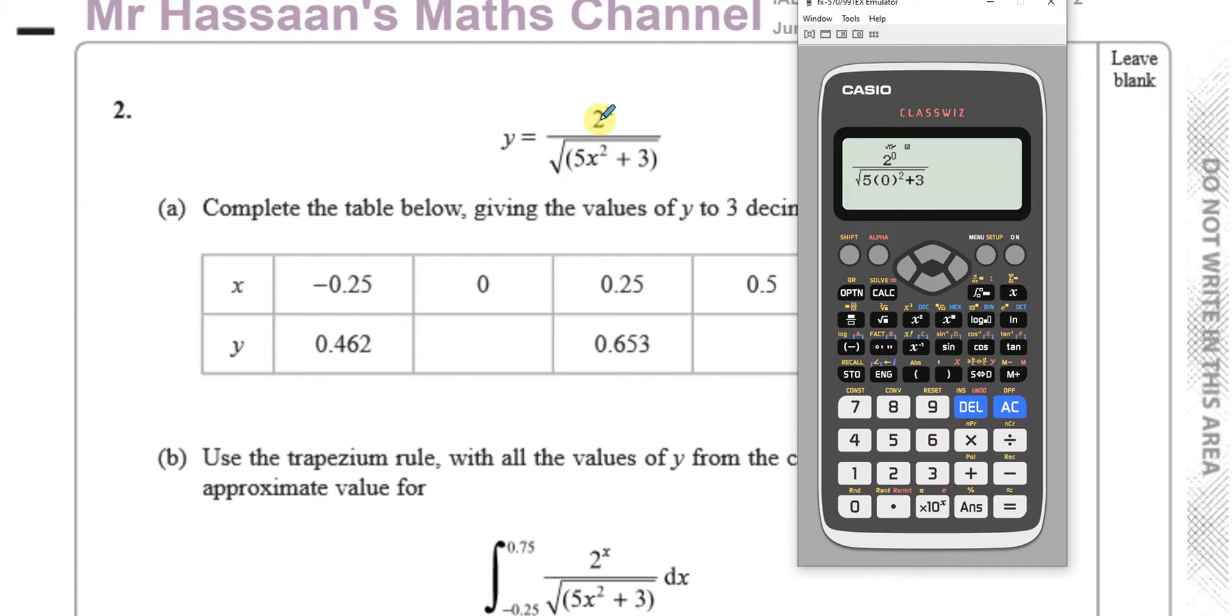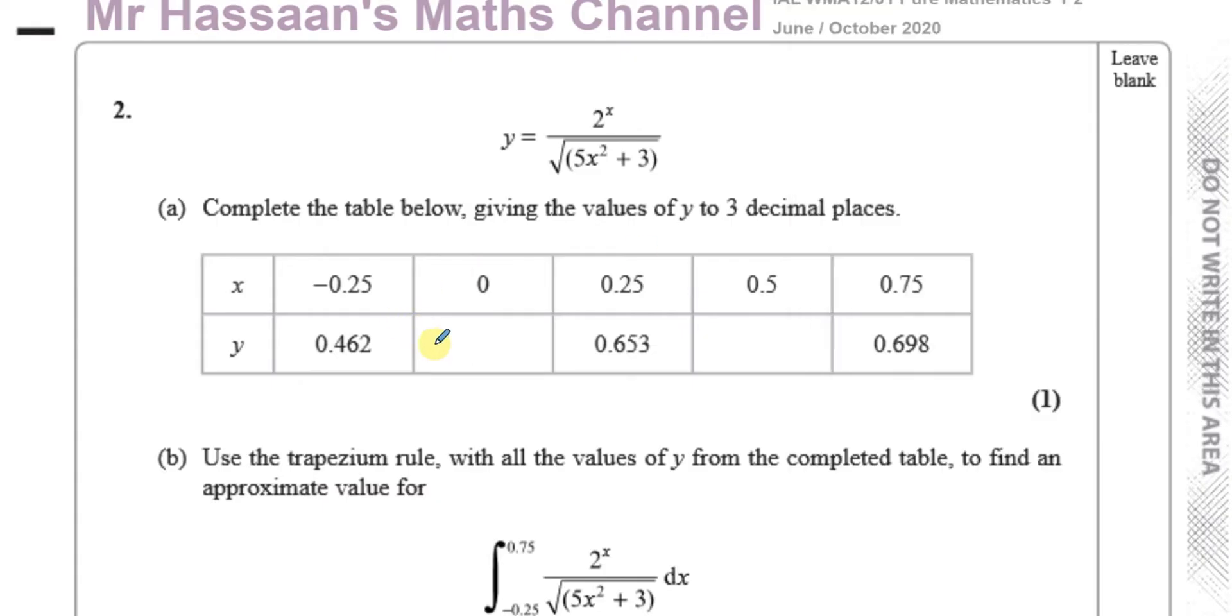So that should give me, we know the answer should be basically 1 over the square root of 3, which is root 3 over 3. And you have to give the answer to 3 decimal places. So I press the S to D button and write it to 3 decimal places, which is 0.577.